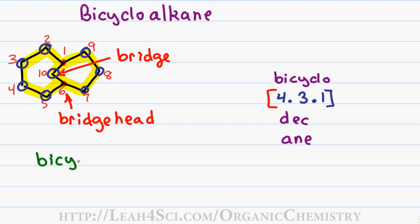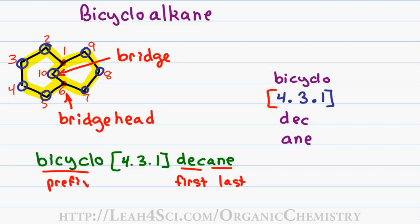Putting this name together, I get bicyclo, open brackets, four dot three dot one close brackets, decane. At first this looks scary but recognize that we still have just a first name, just a last name. We have a prefix that tells us there are two rings and the number designators tell me exactly how the rings are broken up.